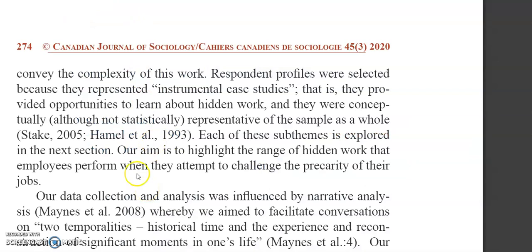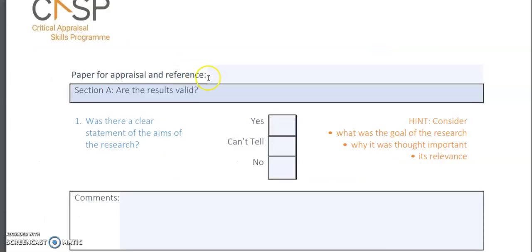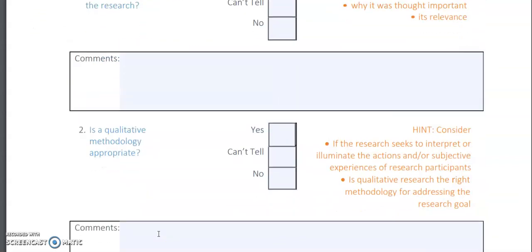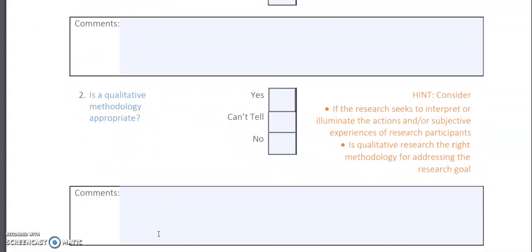The aim can be found in different sections, but for this paper I found it in the methodology section, which was a bit unusual. They stated: 'Our aim is to highlight the range of hidden work that employees perform when they attempt to challenge the precarity of their jobs.' The aim has been clearly stated, so you can tick yes — the aim is stated and its relevance is indicated.